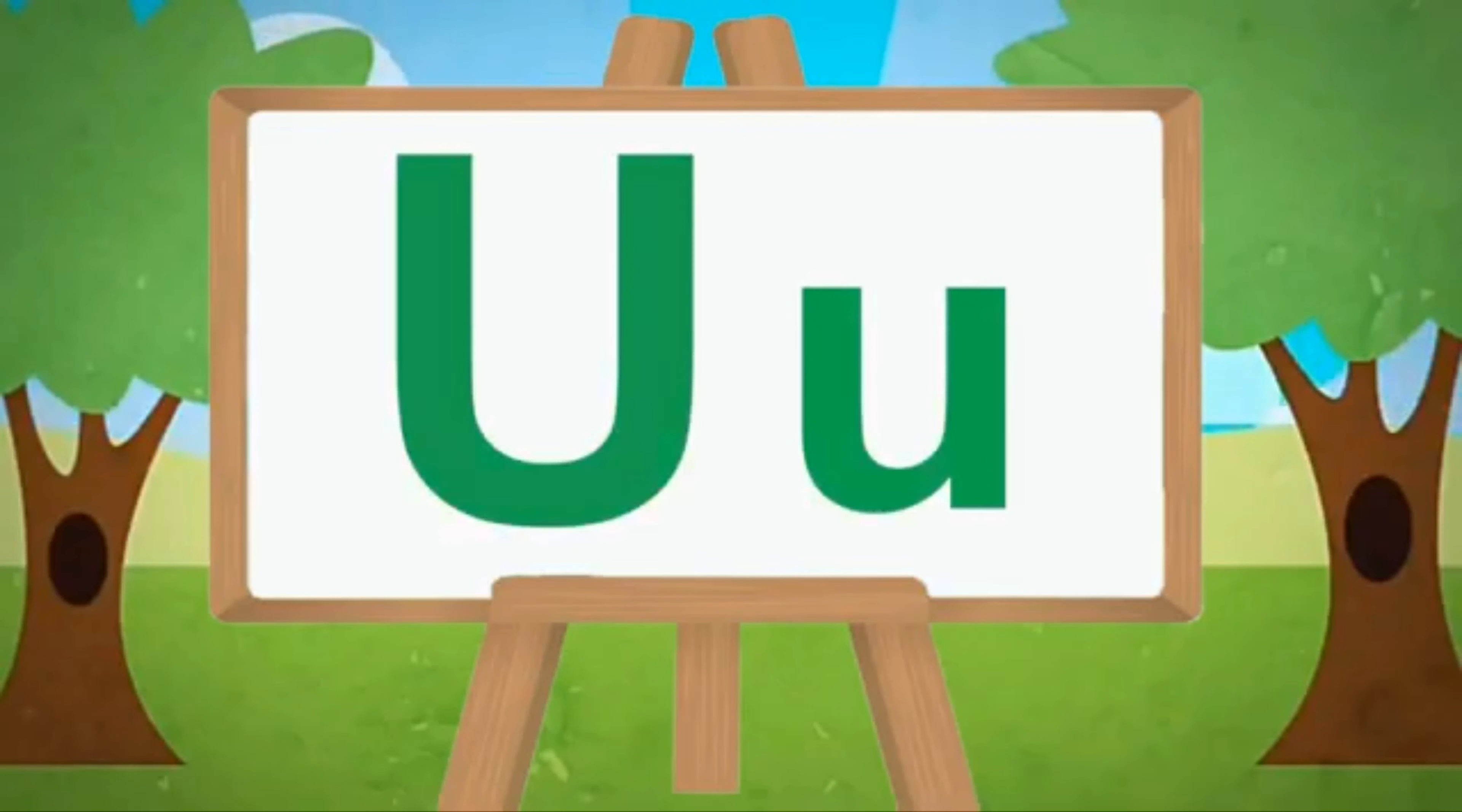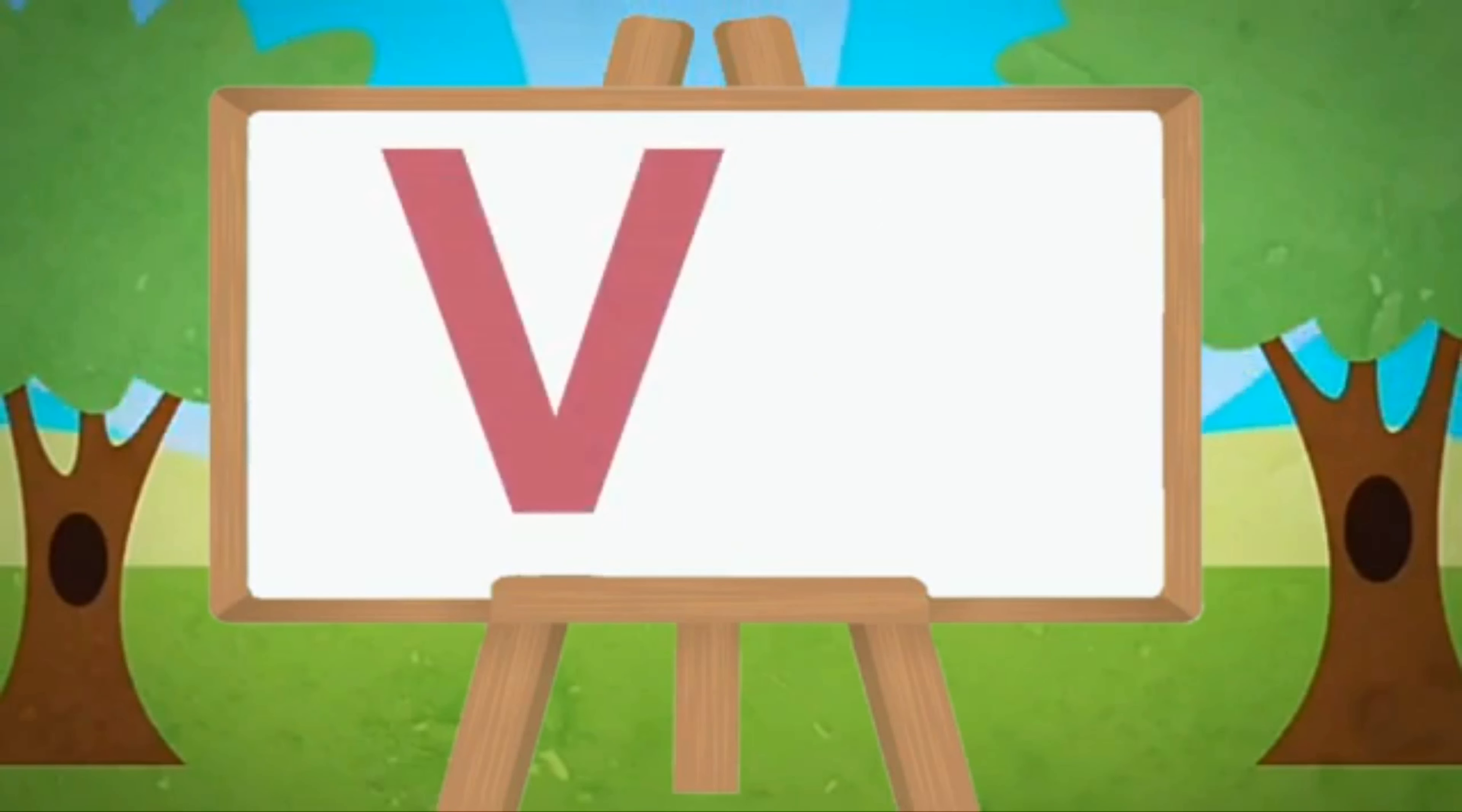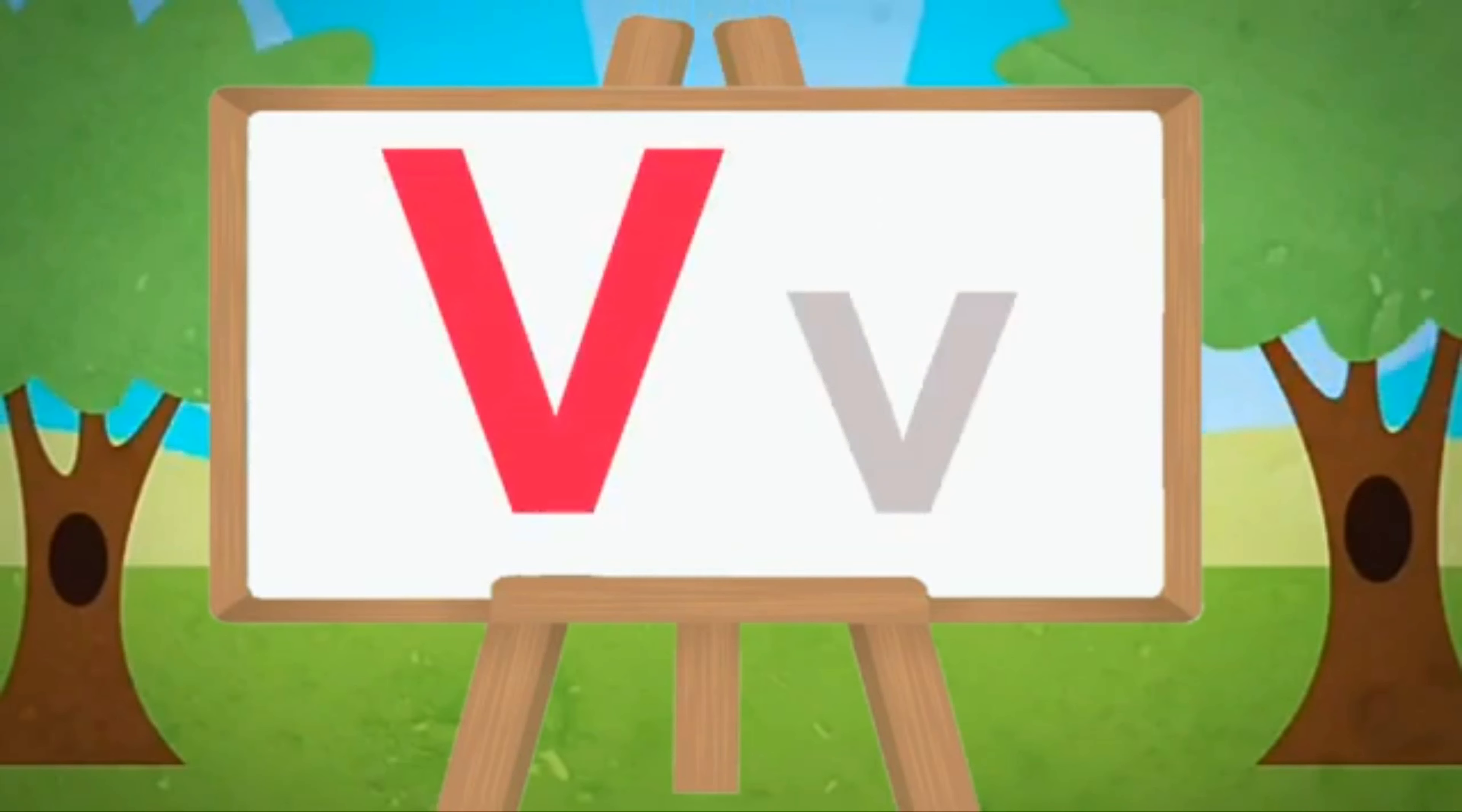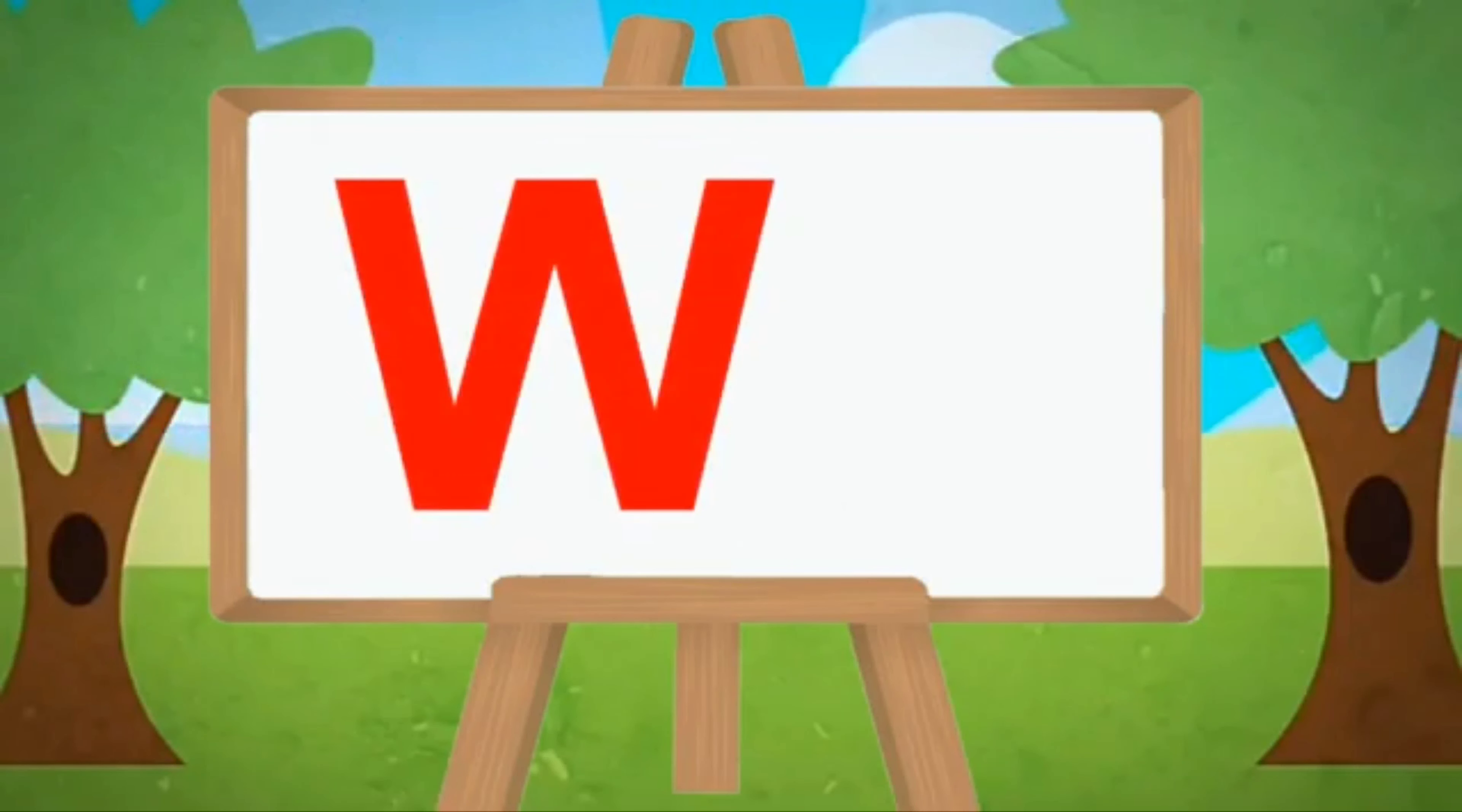Capital U, small u. U for umbrella, U for utensils. Capital V, small v. V for van, V for vase.